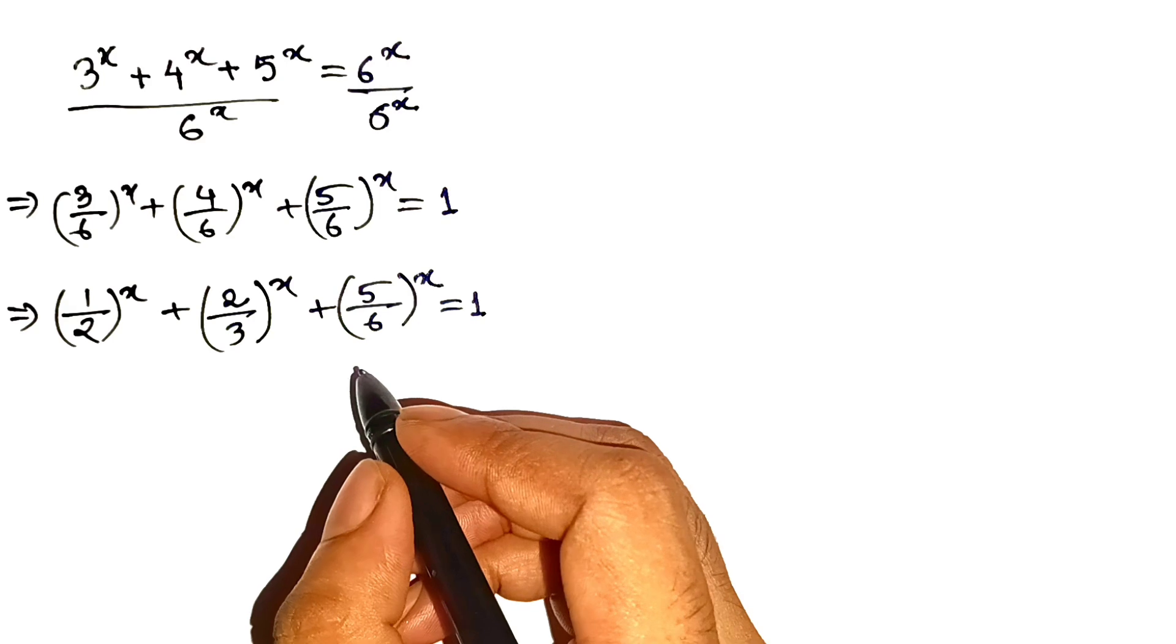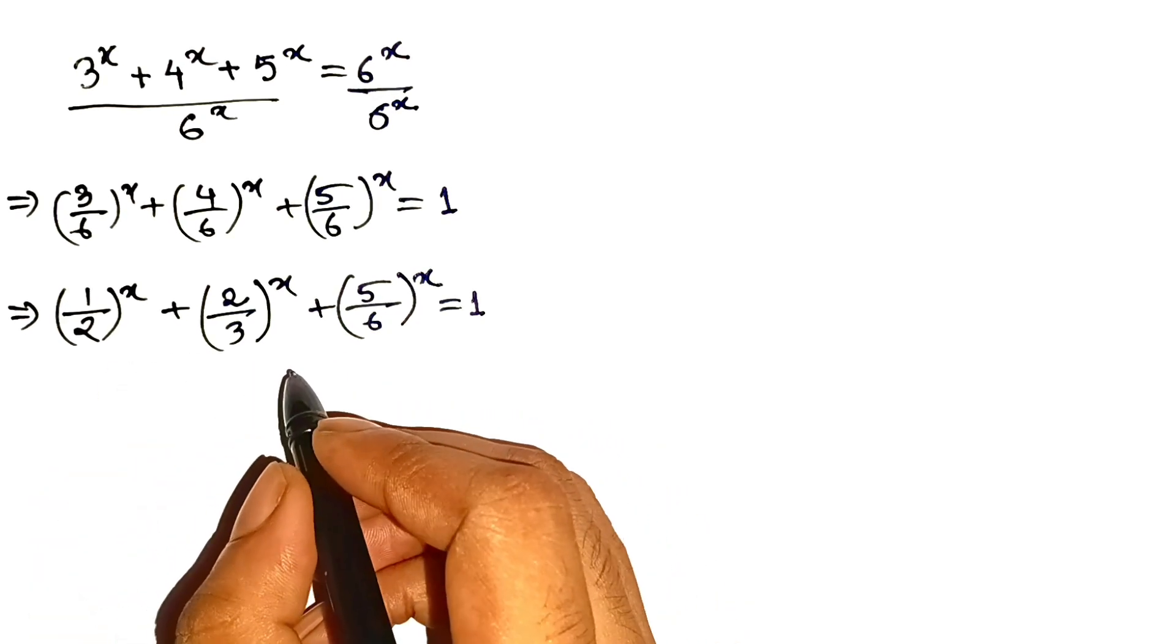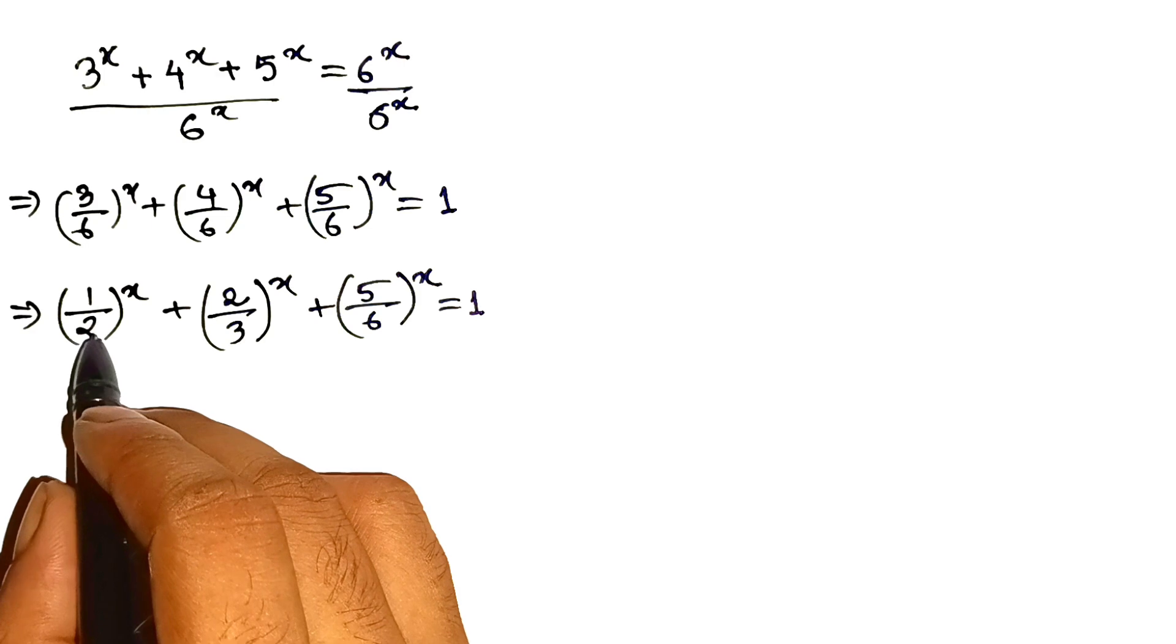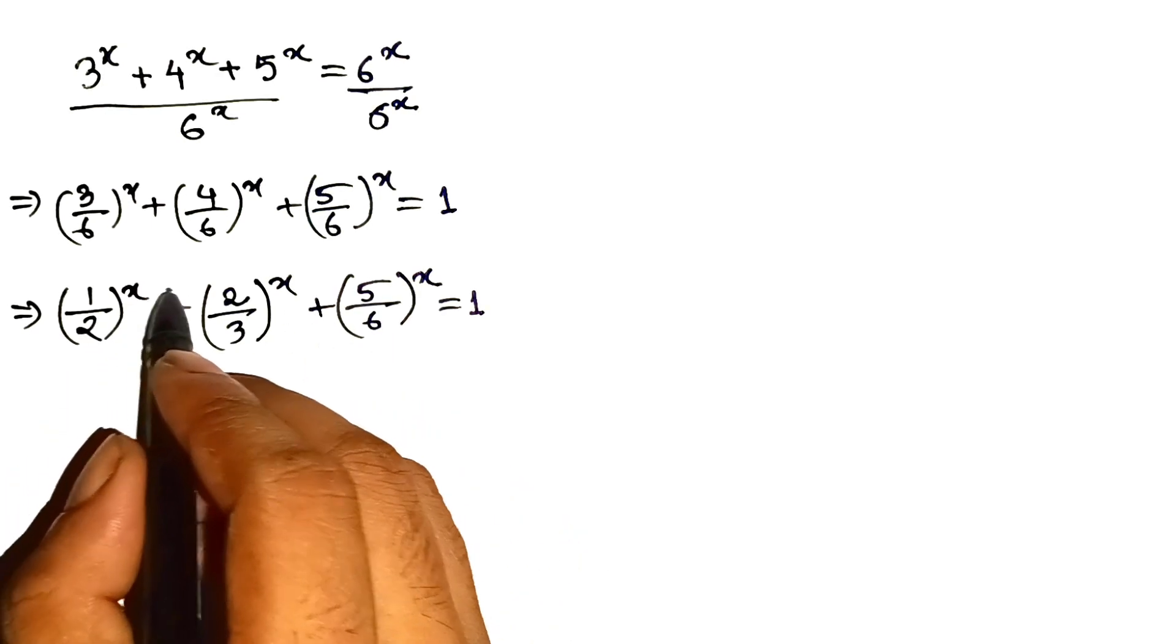Now pause and think. This is genius. Why? Because every single base here is less than 1: 1 half, 2 thirds, 5 sixths. And raising a number less than 1 to higher powers makes it shrink.